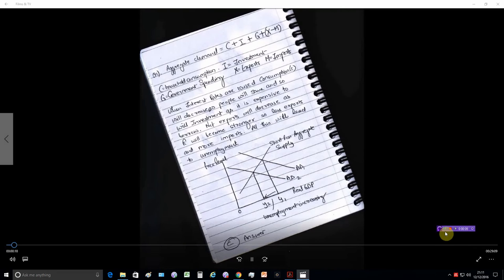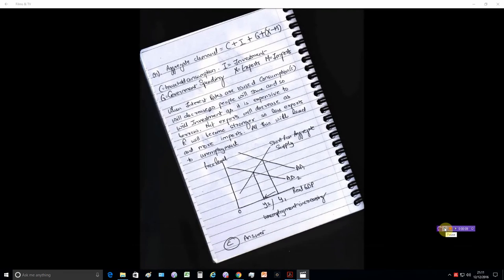We are looking at question 1 about aggregate demand. Aggregate demand has components: C plus I plus G plus X minus M.